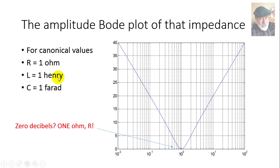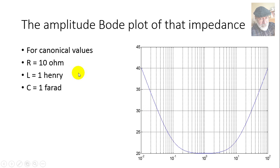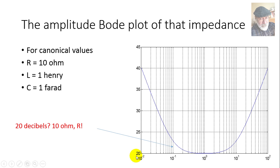What if we keep the same L and C but make the resistance 10 times bigger? We have the same resonant frequency — 1 radian per second — but the curve looks much wider. Many more frequencies are allowed in with minor impedance, so this is a less selective filter. The minimum value is also higher: at frequency 1, L and C cancel, leaving 10 Ω, which is 20 log(10) = 20 dB.